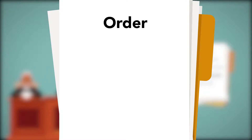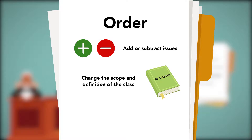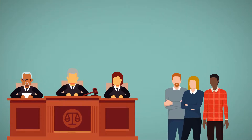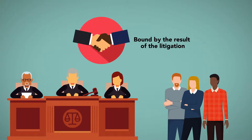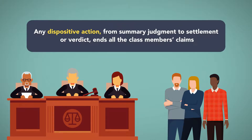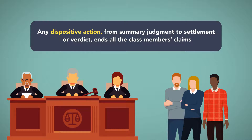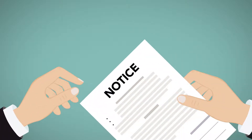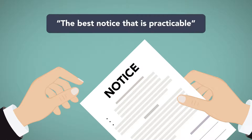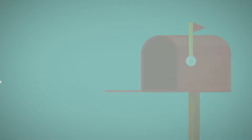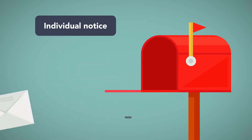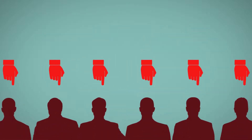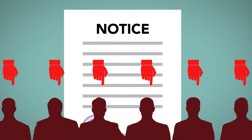The court may later amend the order during the proceeding to add or subtract issues, to change the scope and definition of the class, or to change the identity of counsel. The issuance of the order also means all people who fit the class definition are part of the class and are bound by the result of the litigation, no matter what that result might be. Any dispositive action — from summary judgment to settlement or verdict — ends all the class members' claims. Therefore, it is extremely important to give them notice of the pending class action suit. The court will ensure the notice takes place using the best notice practicable, generally including individual notice to all people in the class who can be identified through reasonable effort, usually by mail. The court will require plaintiff's class counsel to identify individual class members as specifically as possible, and then give notice that the court directs be given.